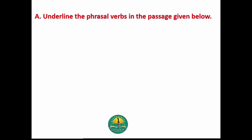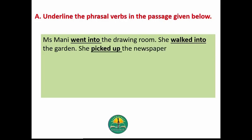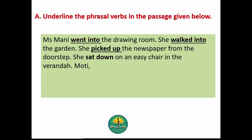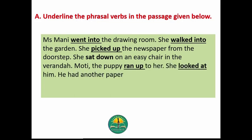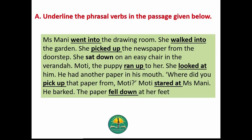Now let's do Exercise A: underline the phrasal verbs in the passage given below. Miss Money went into the drawing room. She walked into the garden. She picked up the newspaper from the doorstep. She sat down on an easy chair in the veranda. Moti the puppy ran up to her. She looked at him — he had another paper in his mouth. 'Where did you pick up that paper from, Moti?' Moti stared at Miss Money, he barked, and the paper fell down at her feet.